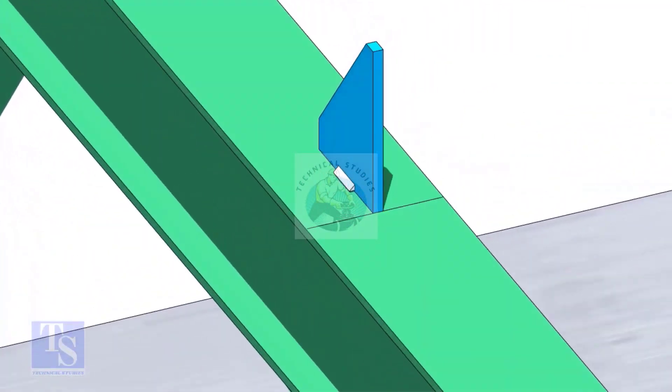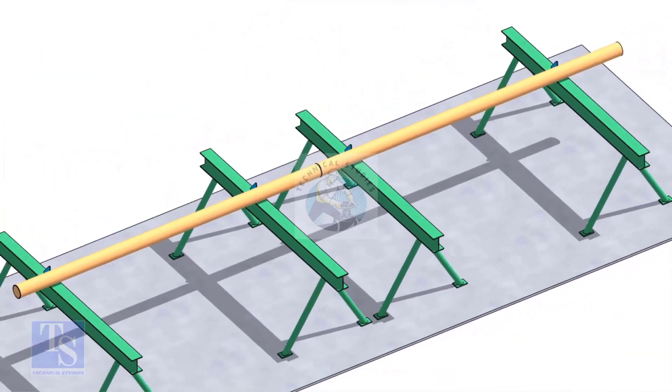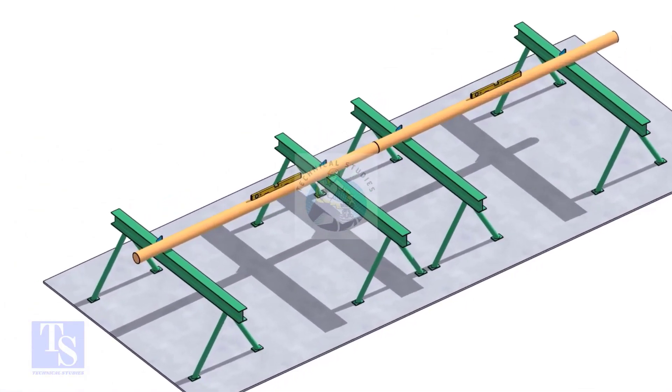Put the pipes on the stands, touching the stopper plates, as shown. The joint shall be in between the supports. Now the pipes are already straight, horizontally and vertically.